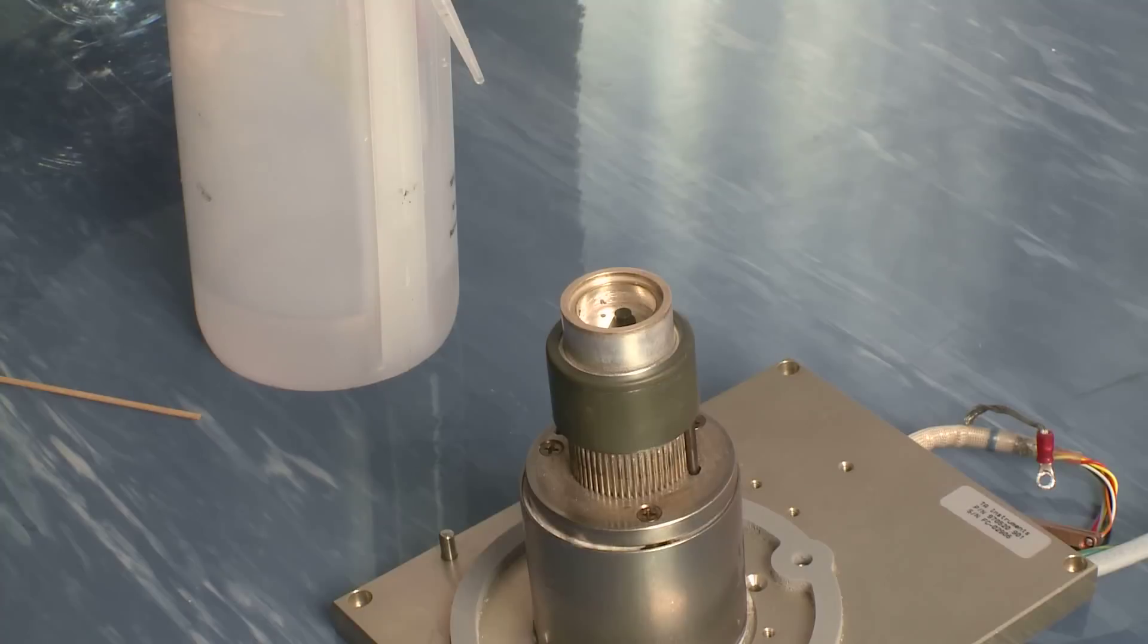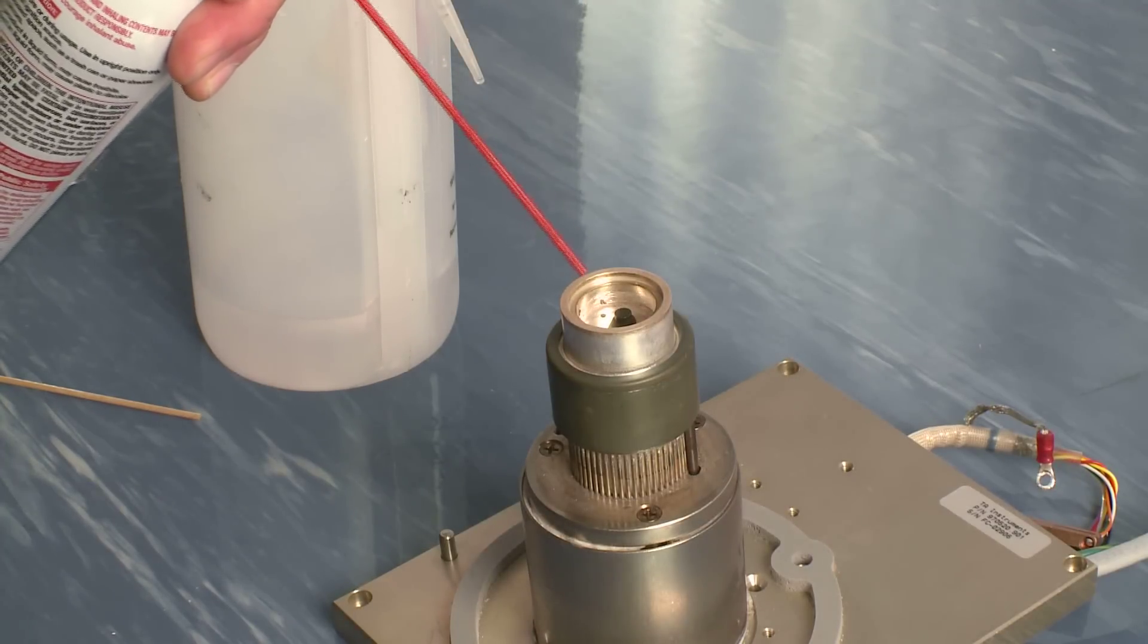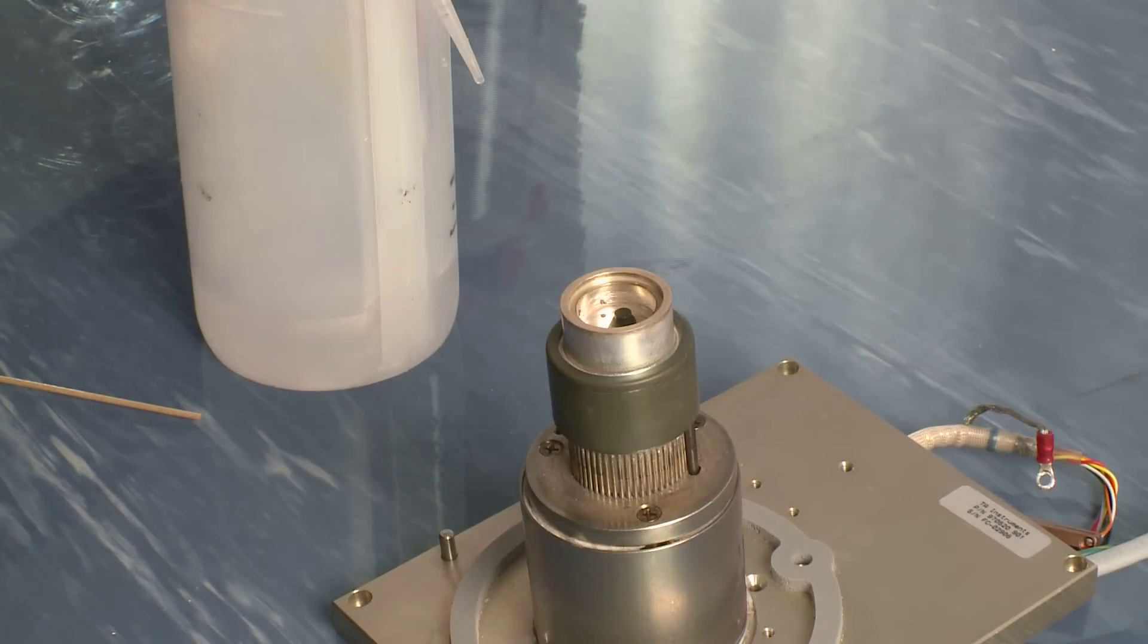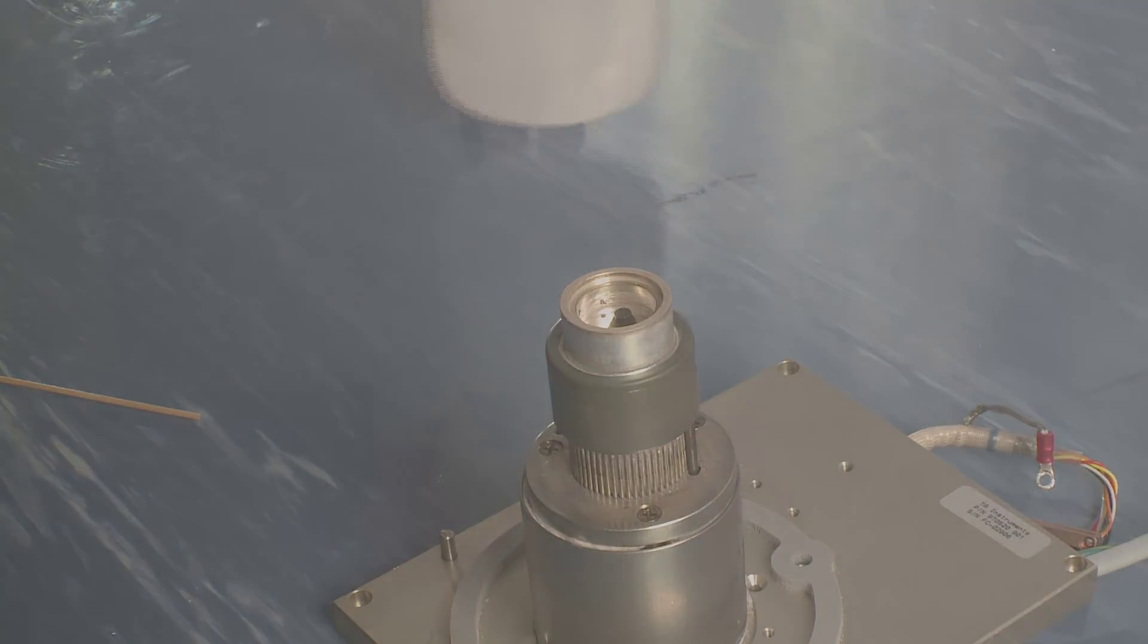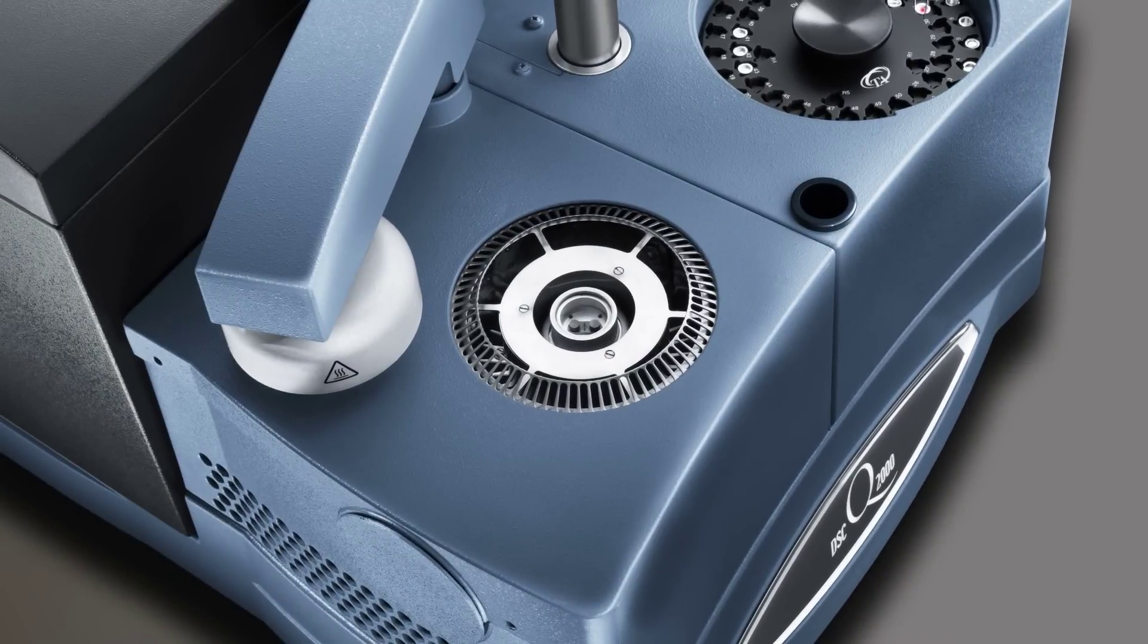Again, spray compressed air in case you got some cotton fibers in there. Then we suggest heating the cell up to about 100 degrees for maybe 10 minutes to evaporate any residual solvent.